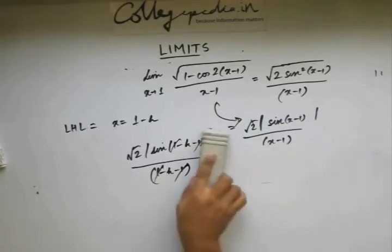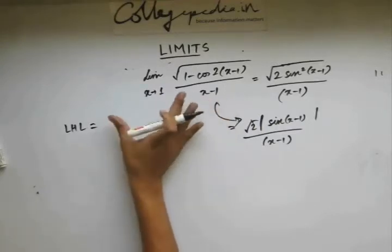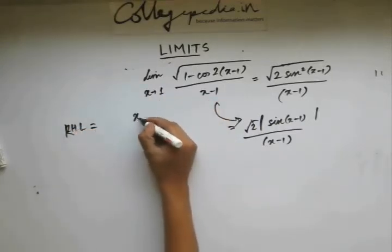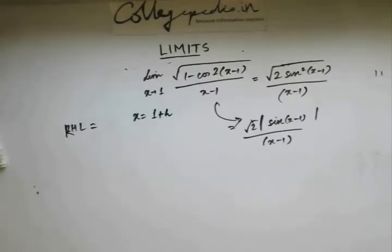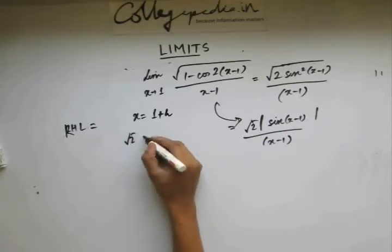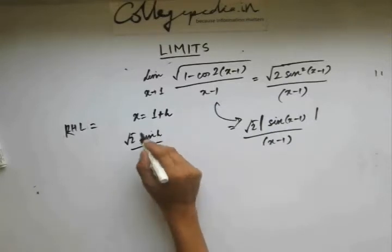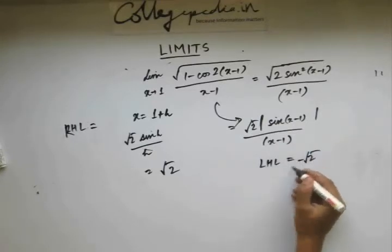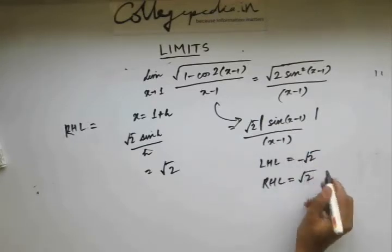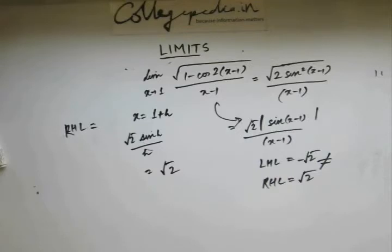For the right-hand limit, take x = 1 + h. Substituting gives sin h in the numerator and h in the denominator. Using the series expansion and putting h = 0, this gives 1, so the right-hand limit is √2. The left-hand limit is −√2 and the right-hand limit is √2 — these two are not equal, so the limit doesn't exist in this case again.